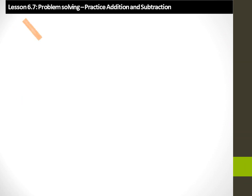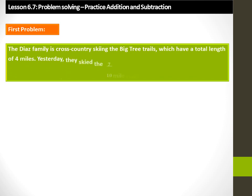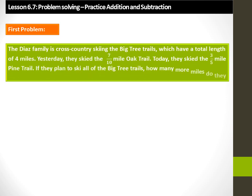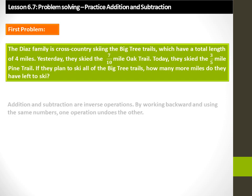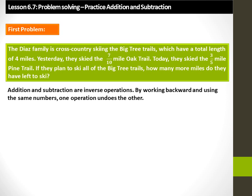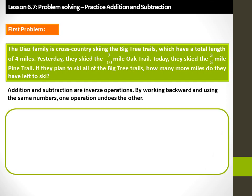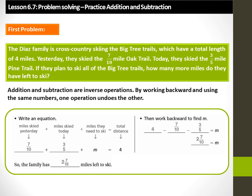Problem solving: practice addition and subtraction. The Diaz family is cross-country skiing the Big Tree Trails, which have a total length of 4 miles. Yesterday they skied the 7 over 10 mile Oak Trail, and today they skied the 3 over 5 mile Pine Trail. How many more miles do they have left to ski? Addition and subtraction are inverse operations — by working backwards using the same numbers, one operation undoes the other. Miles skied yesterday plus miles skied today plus miles left equals total distance: 7 over 10 plus 3 over 5 plus m equals 4. To find m, work backwards: m equals 4 minus 7 over 10 minus 3 over 5. The answer is 2 7 over 10, so the family has 2 7 over 10 miles left to ski.